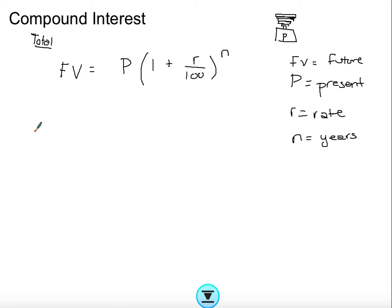It's just a matter of substituting values in. Different values will be missing in different questions — sometimes they'll ask for the future value, sometimes the present value, sometimes the rate, and sometimes the number of years. It's just a matter of using algebra to solve for whichever is unknown.